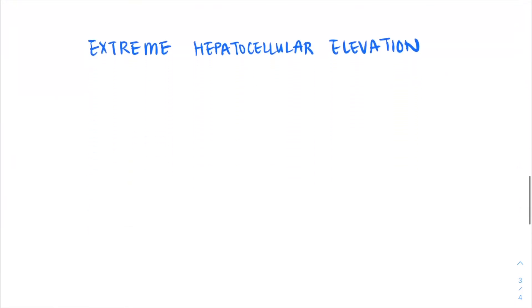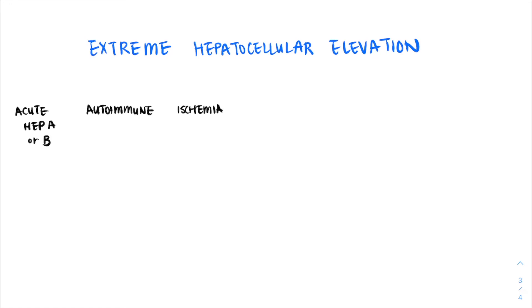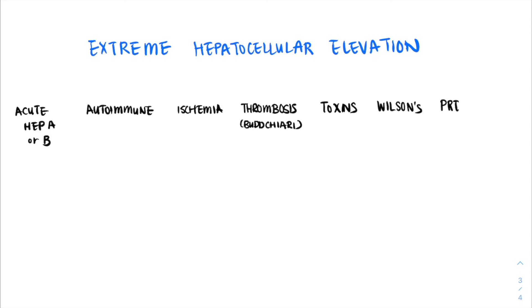When we think about extreme hepatocellular patterns of elevation — ALT or AST greater than 1,000 — there is quite a limited differential. We should think about acute hepatitis, specifically hepatitis A and hepatitis B. Autoimmune presentations may also present with extreme elevation. Other causes include ischemia or shock liver, acute thrombosis specifically of the hepatic vein (called Budd-Chiari syndrome), toxins (particularly Tylenol, because it's a reversible cause), Wilson's disease, and pregnancy-related conditions.